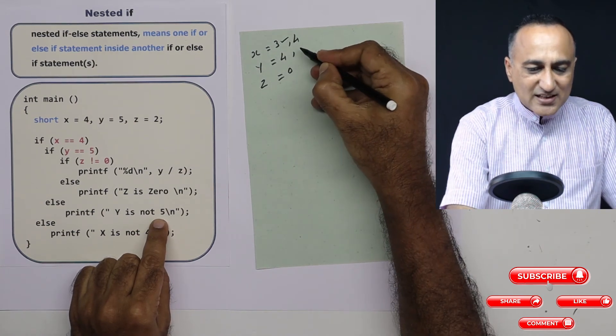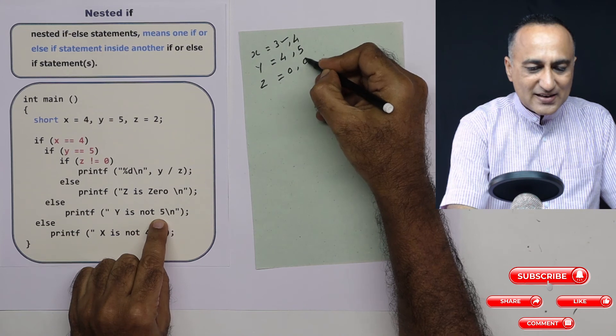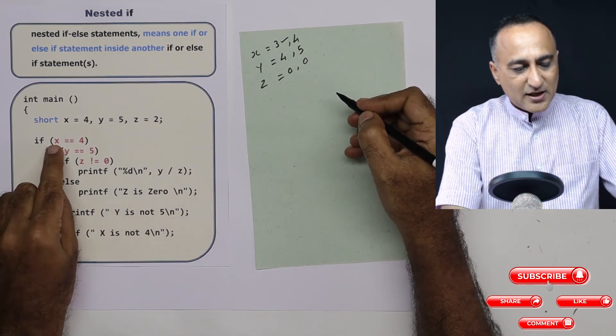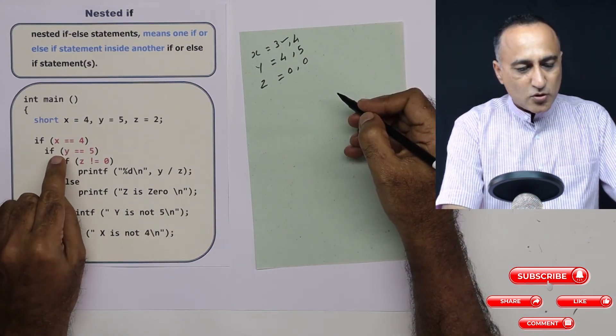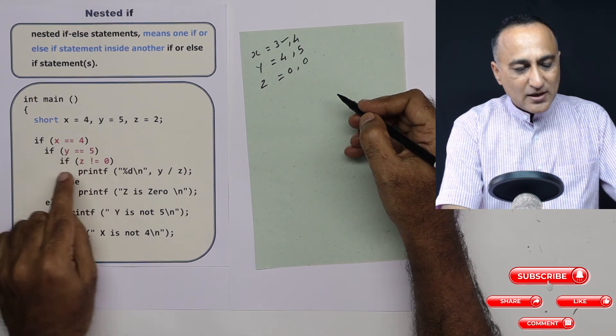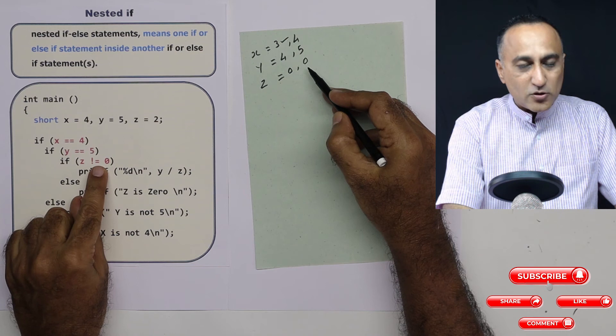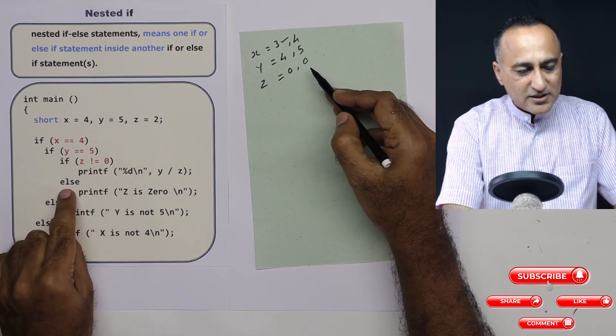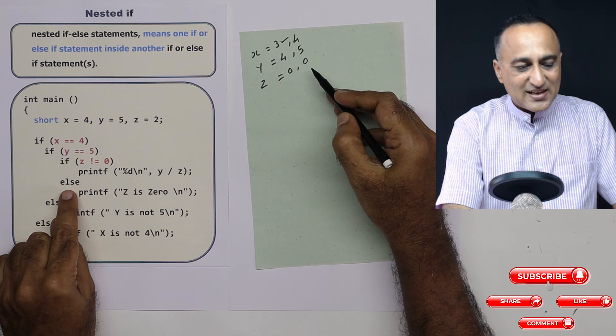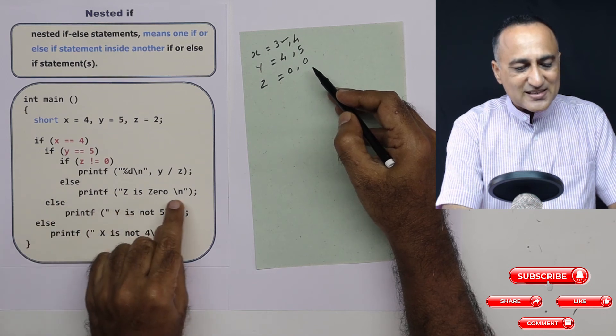Now let's take x is 4, y is 5, and z is 0. If 4 is equal to 4 is true. 5 is equal to 5 is true. Now z is 0. 0 is not equal to 0 is again false. Since it is false it will take part in this else. This else, it will print z is 0.